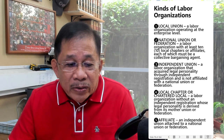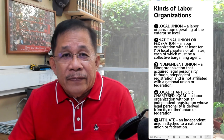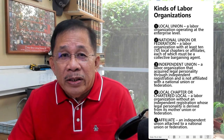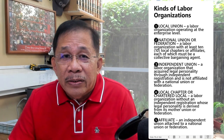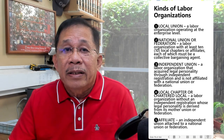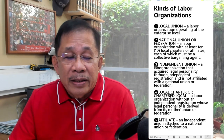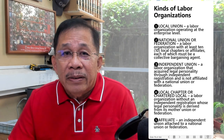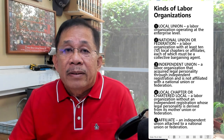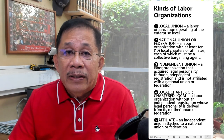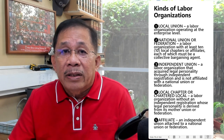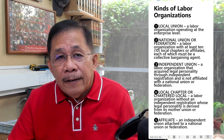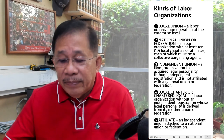We also have the local chapter, which refers to a labor organization without an independent registration but whose legal personality is derived from its mother union or federation. Then we have the affiliate, which is an independent union attached to a national union or federation.